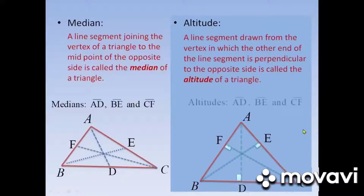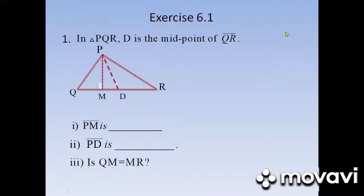So in this triangle, AD, BE, and CF are the altitudes of triangle ABC. Now you have understood certain properties and the related parts of a triangle. Let us try to solve certain problems from exercise 6.1.